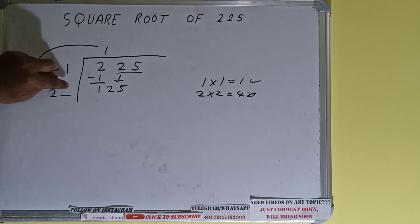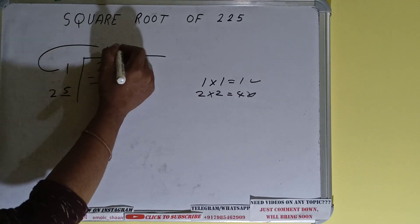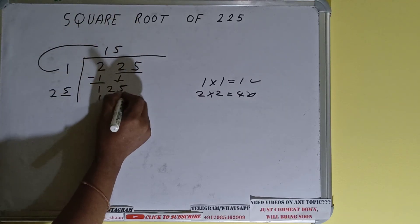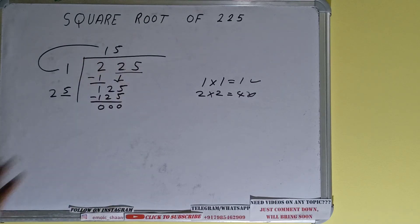Whatever number we write here we have to write here also. So five times we can try. So five here and five here will give 125, which will give the remainder as zero.